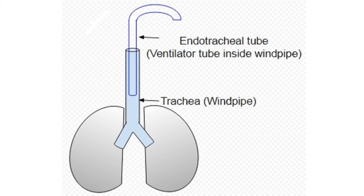A tube is put in the windpipe for giving artificial breaths, either using a bag and mask or with a breathing machine ventilator. It could also be used to give anaesthetic agents to the lungs.